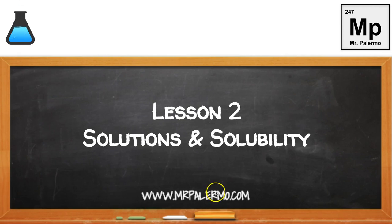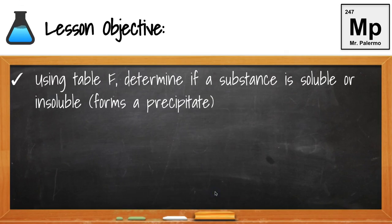Welcome to Lesson 2, Solutions and Solubility. Our lesson objective is to use Table F to determine if a substance is soluble or insoluble, meaning it forms a precipitate.